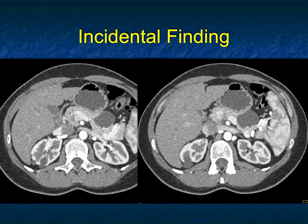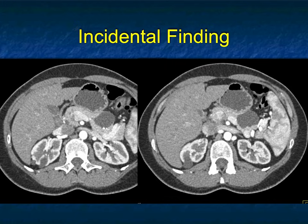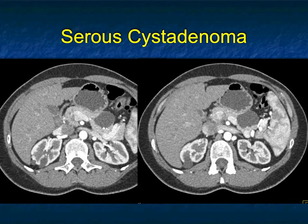Incidental finding: cystic lesion at the body-tail junction of the pancreas with some faint calcifications. Based on location, I could think about an MCN — good location, particularly if the patient is female in their 40s. I could think about a large IPMN or a serous cyst adenoma. It doesn't have the look of a SPNP tumor or adenocarcinoma. The way it sits exophytically, it could be a lymphoepithelial cyst. This patient typically gets EUS, and this was a serous cyst adenoma. Remember, serous cyst adenomas have a range of appearances from multiple septations to calcifications to oligocystic, with some faint calcifications in the periphery.